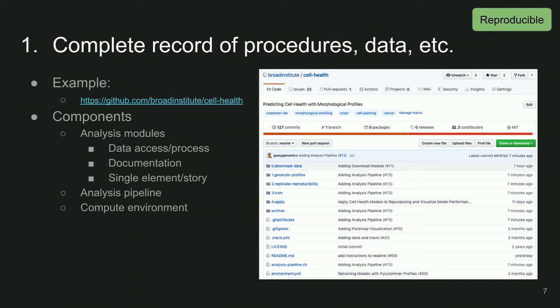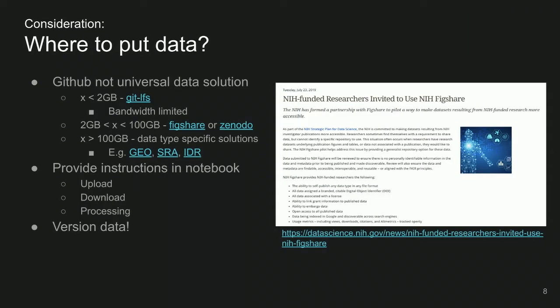The first component: a lab notebook represents a complete record of procedures and data. In this example repository, each folder represents an analysis module — standalone self-contained units, each representing a specific step in the analysis, whether it's training a model, applying a model, processing the data, or downloading the data. These components are embedded within the repository as an analysis pipeline — a bash or Python script — so a user knows exactly the steps required to reproduce the analysis. Also included is a compute environment file, such as a conda environment file specifying package versions.